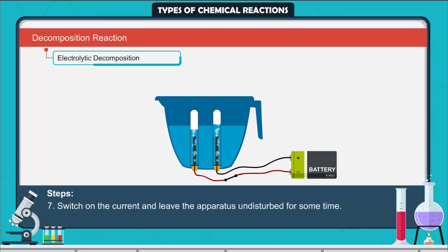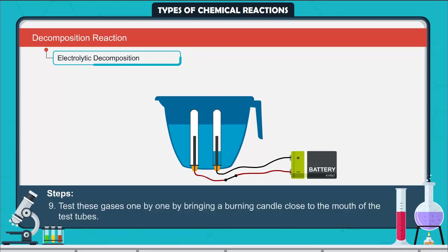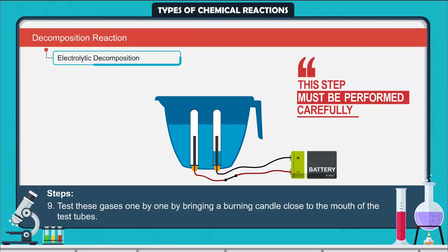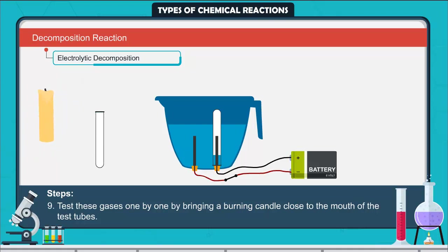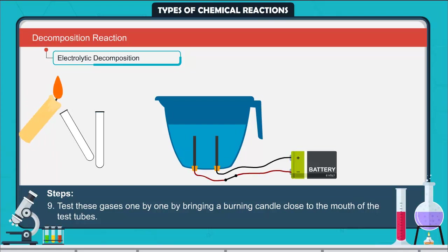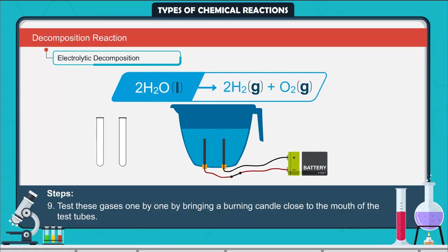These bubbles displace water in the test tubes. Once the test tubes are filled with the respective gases, remove them carefully. Test these gases by bringing a burning candle close to the mouth of the test tubes. The test tube with more gas contains hydrogen gas. The second test tube — where the candle flame burnt more brightly — contains oxygen gas. When electricity is passed through water, it decomposes into hydrogen and oxygen.